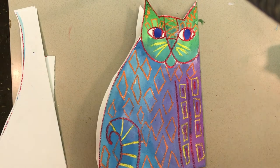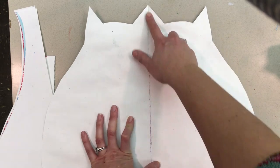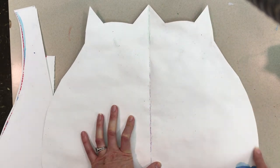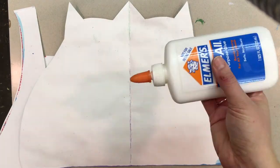The next step is to glue half of the cat. You're going to open it up and on the right-hand side you're going to go around and outline it with glue. Hold the glue bottle with your thumb on top and your fingers on the bottom.